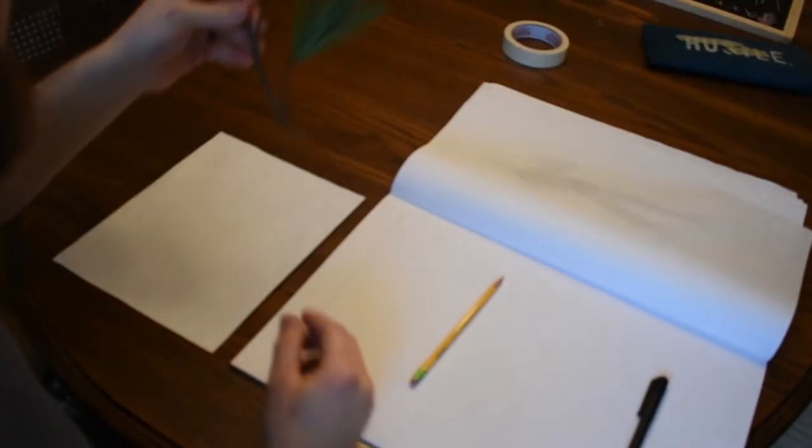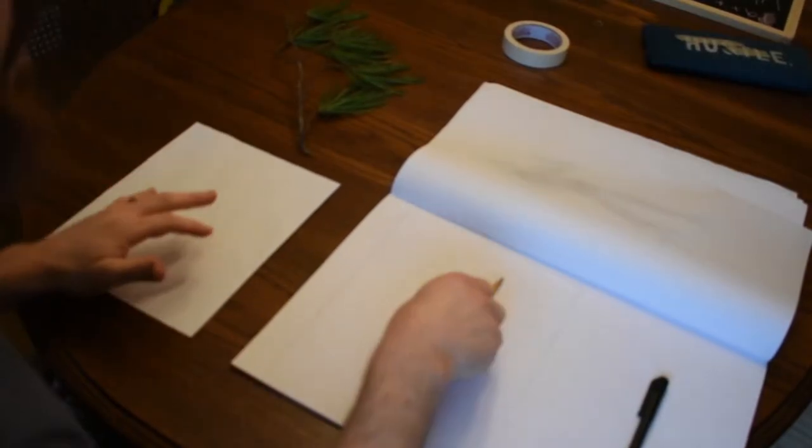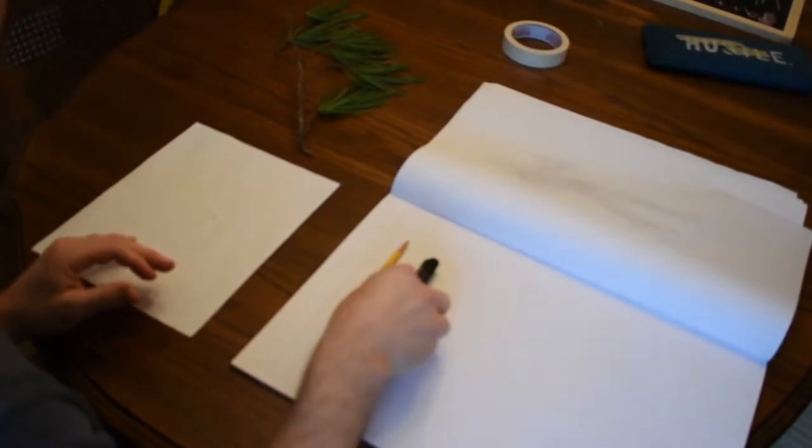Whenever you're ready, you can follow along with this exercise. I'm going to walk you through it and talk about what I'm doing and everything you need. We're going to be using a stick or a twig or leaves, something you can find in any old bush or tree, a pencil, a sharpie, and a white piece of paper like a sheet of printer paper.